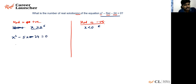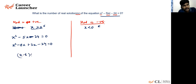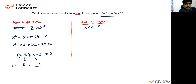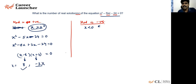Factoring x² − 5x − 24 = 0: we get (x − 8)(x + 3) = 0, so x = 8 or x = −3. Since we assumed x ≥ 0, only x = 8 is valid. That gives one solution from this case.